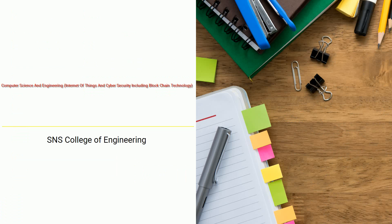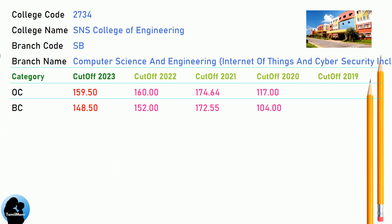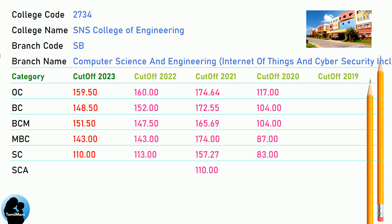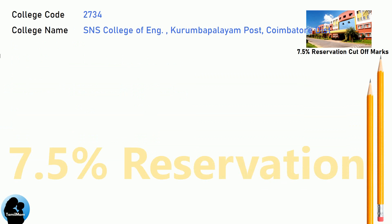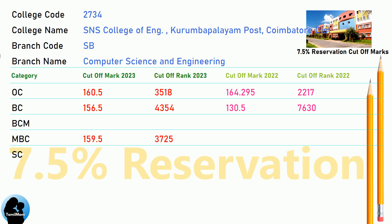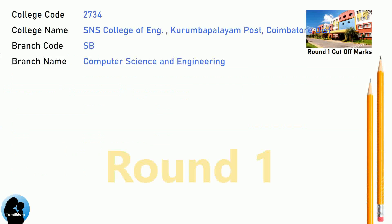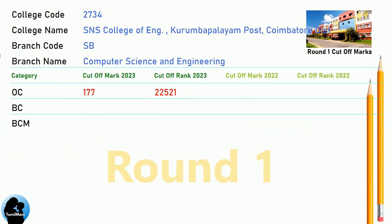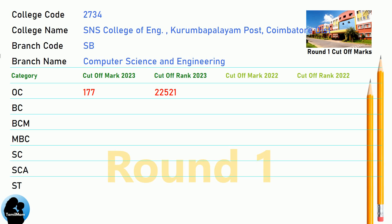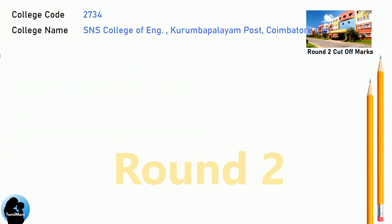DNA Cut-Off for ASNS College of Engineering in Computer Science and Engineering Internet of Things and Cyber Security including Blockchain Technology. DNA 7.5 Reservation Cut-Off for ASNS College of Engineering in Computer Science and Engineering. DNA Round 1 Cut-Off for ASNS College of Engineering in Computer Science and Engineering.